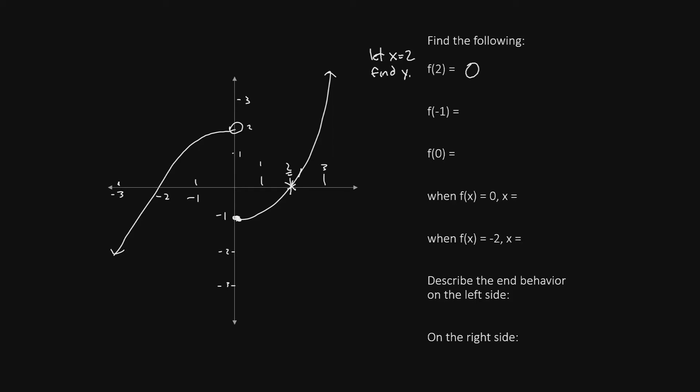Let's try it again for f(-1). We'll let x equal negative 1. That will be in this position. Let's go up to where the graph is and place a star, and then try to figure out the y value by drawing a dotted line to the right to the axis.